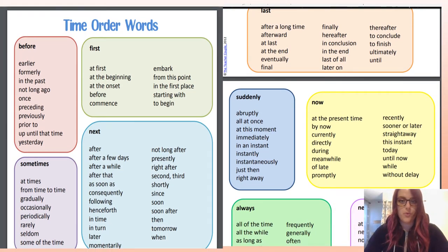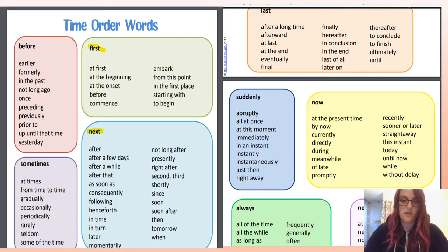Here are some examples of time order words. Look at the box in green for the word 'first.' We want to try to use sequence words other than just first, next, then, and last — we use those all the time, so we want to shake it up a little. The following slides show examples of words to use instead of 'first,' 'next,' 'then,' and 'last.'